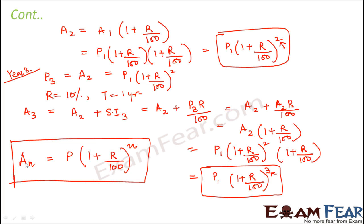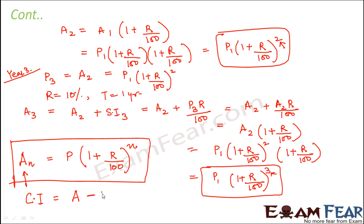Please understand that A = P × (1 + R/100)^N gives you the amount at the end of N years, not the compound interest itself. If you want to calculate the compound interest, it equals the amount at the end of N years minus the principal: CI = A − P.